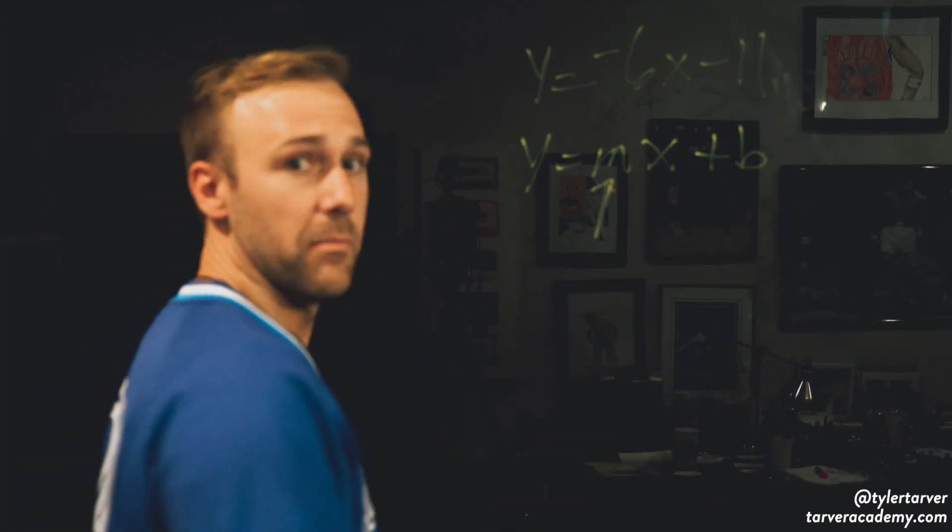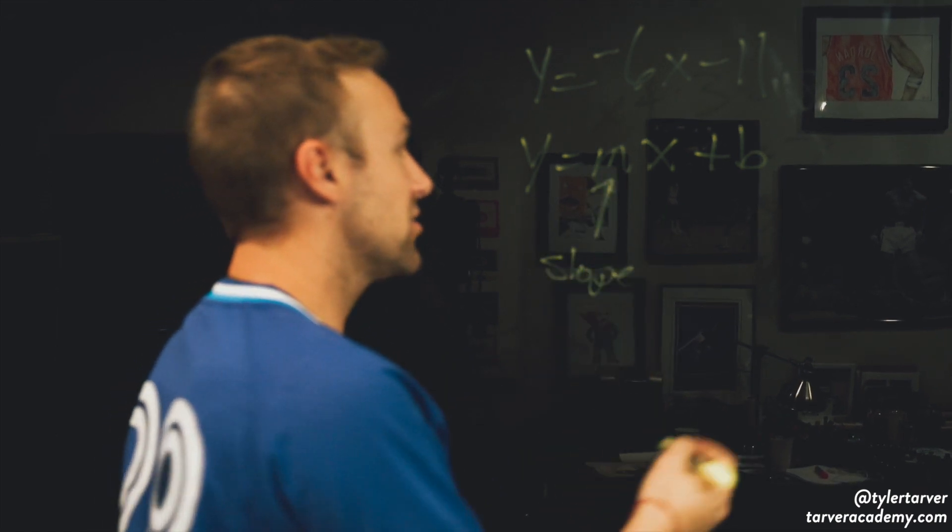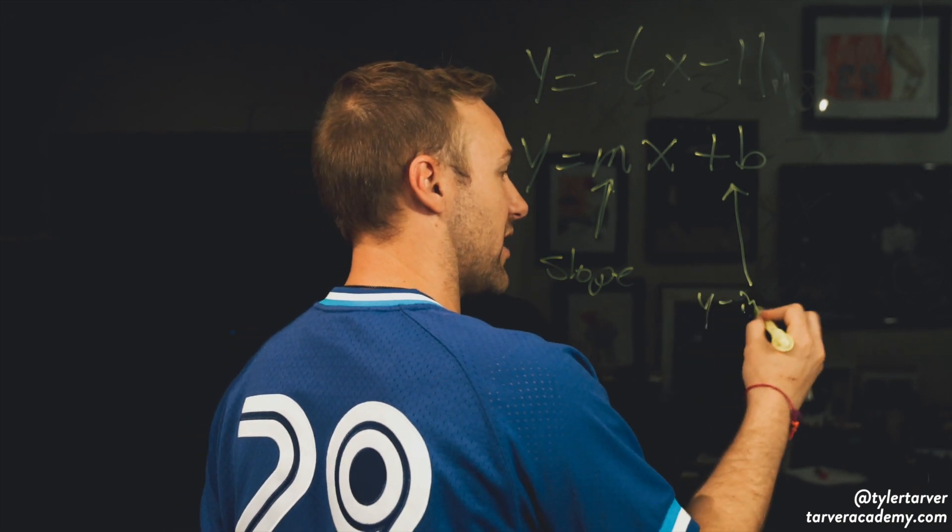So in this problem, the m is your slope. So whatever's in the place where that number is, is your slope. Whatever's in the place of b is your y-intercept.